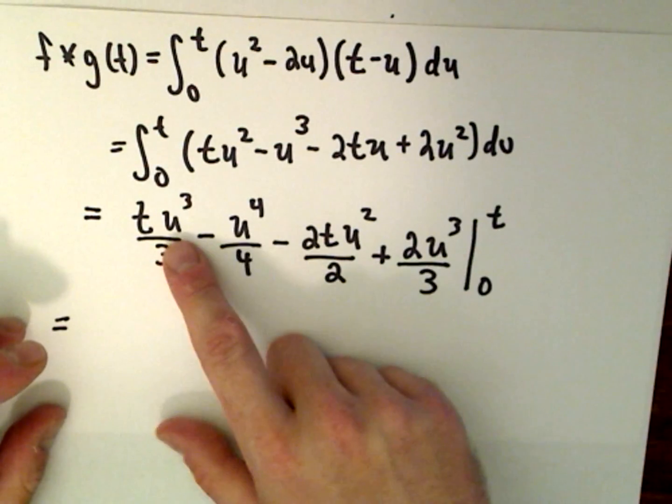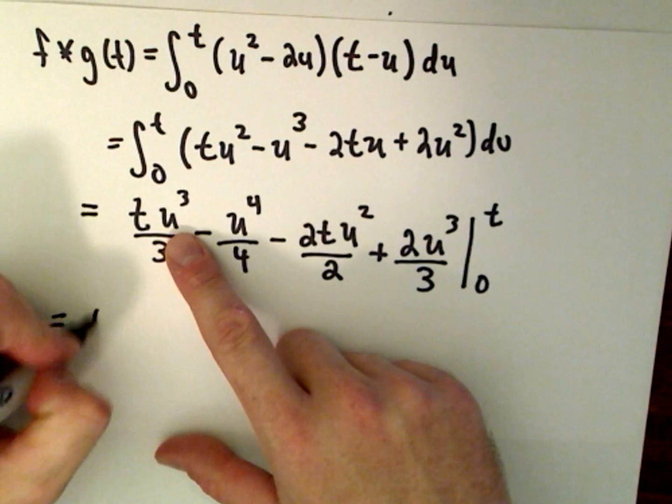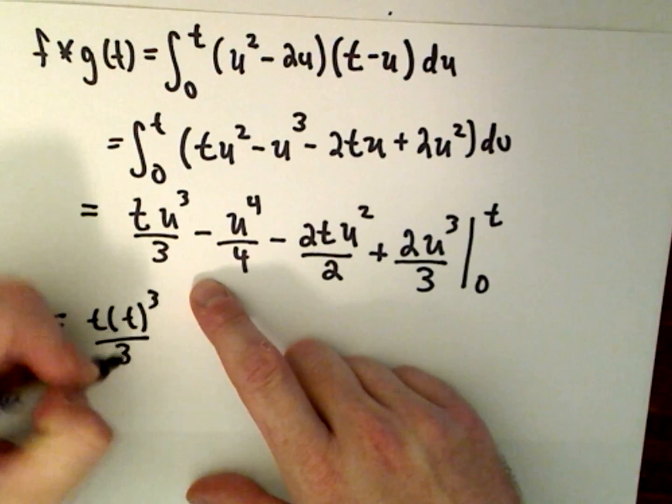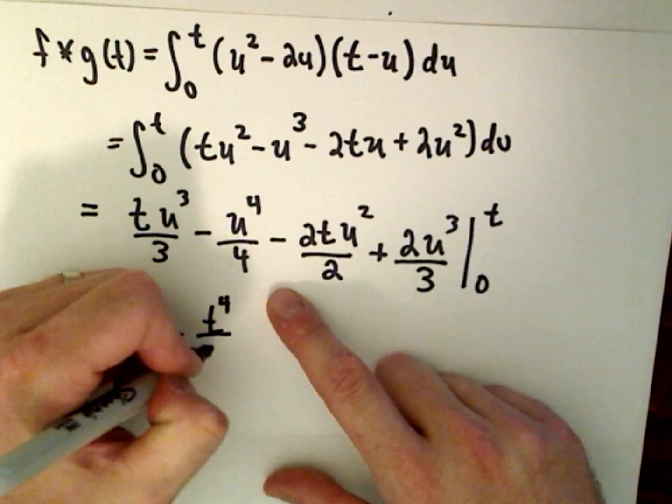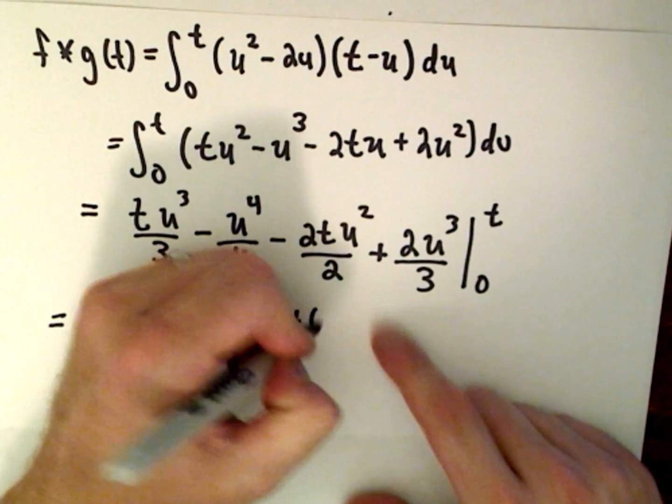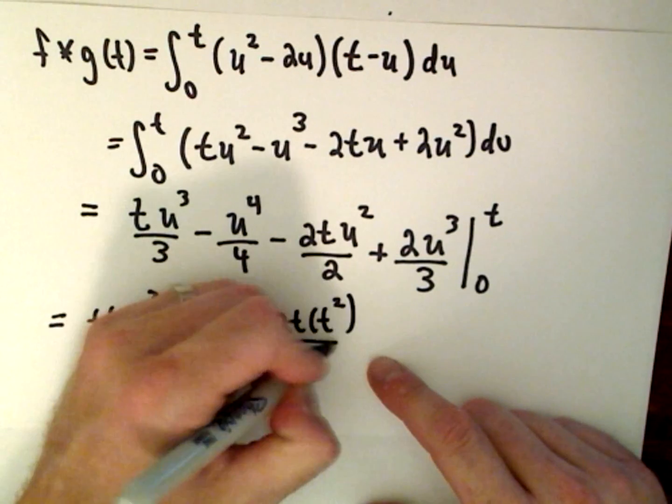We're replacing all of our u's with t's, so we'll have t multiplied by t raised to the third power over 3, minus t to the fourth over 4, minus 2t then we'll have t squared over 2, plus we'll have 2 times t to the third over 3.